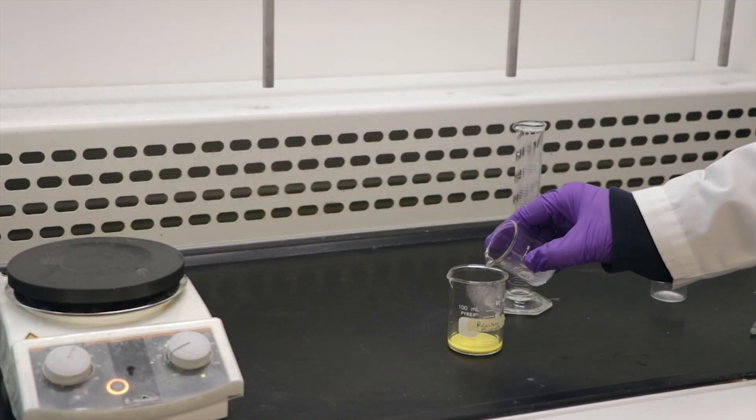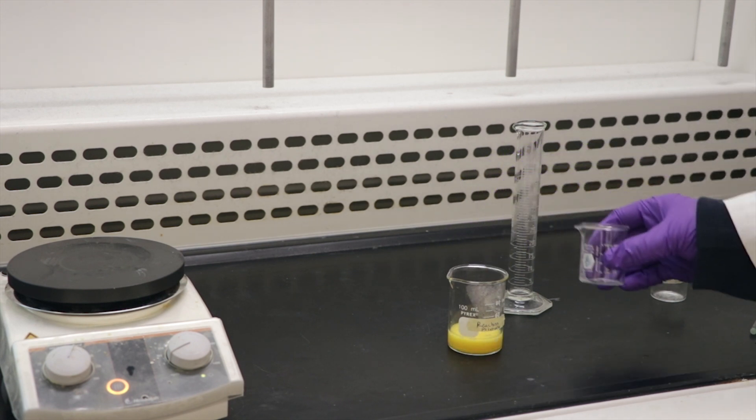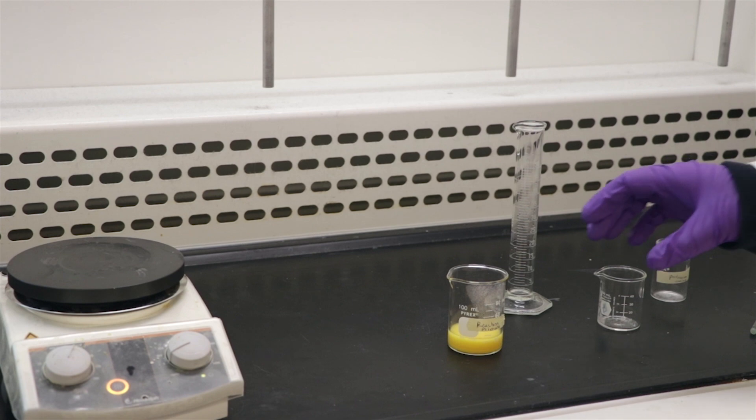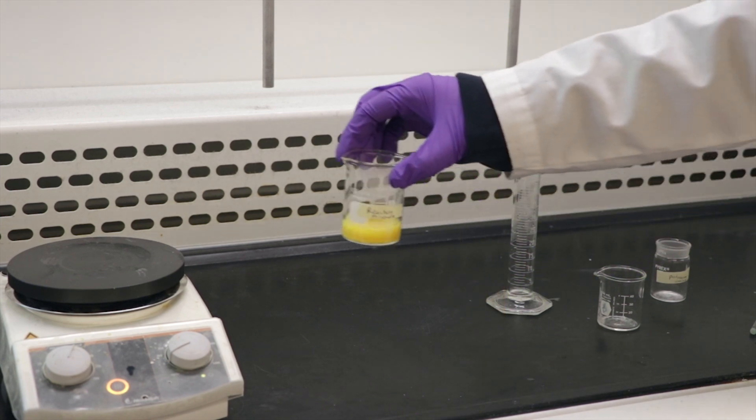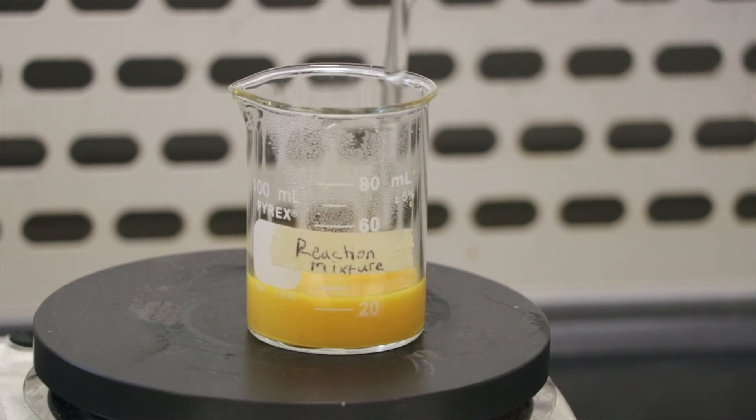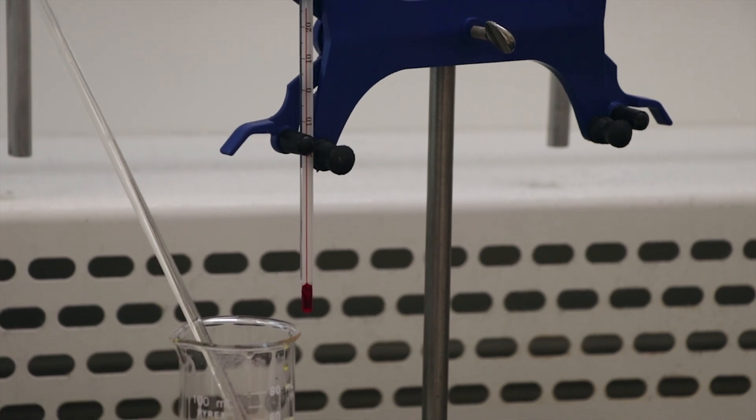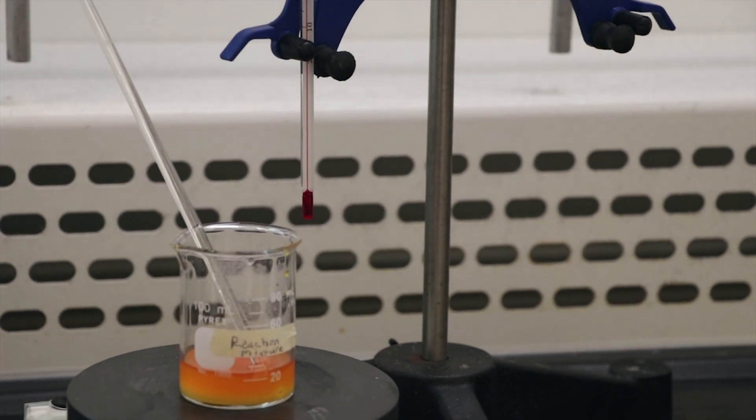Gently add the potassium oxalate solution to the yellow ferrous oxalate solution and place it on the hot plate and stir. You should notice the solution turning into an orange-red color. At this point, you can clamp your thermometer to the retort stand. Turn off the hot plate and allow the mixture to cool down.